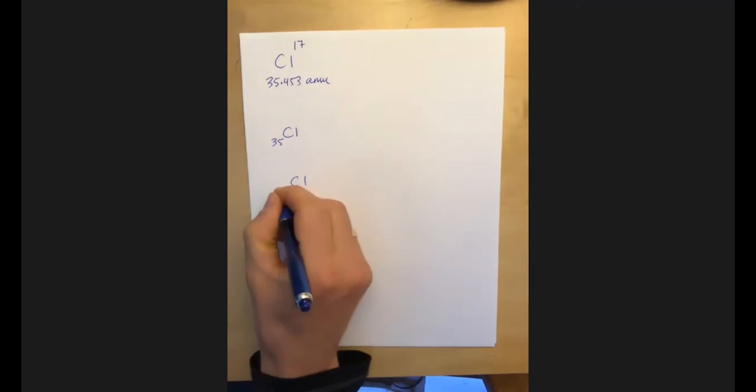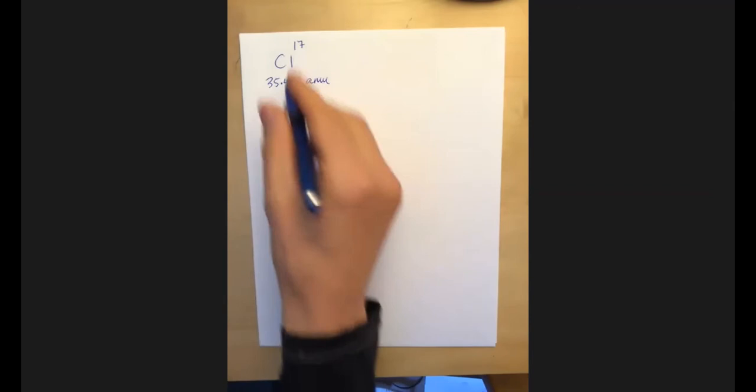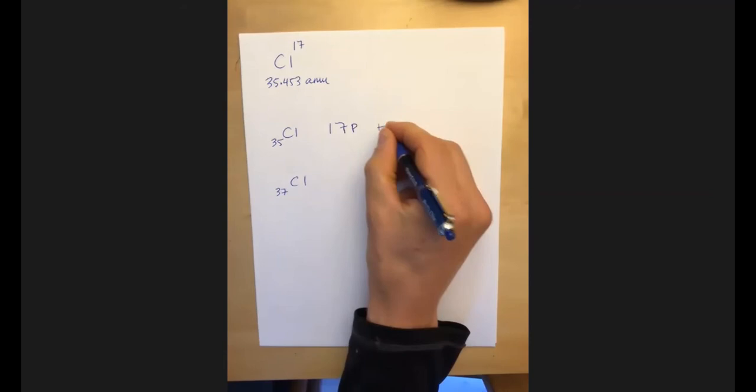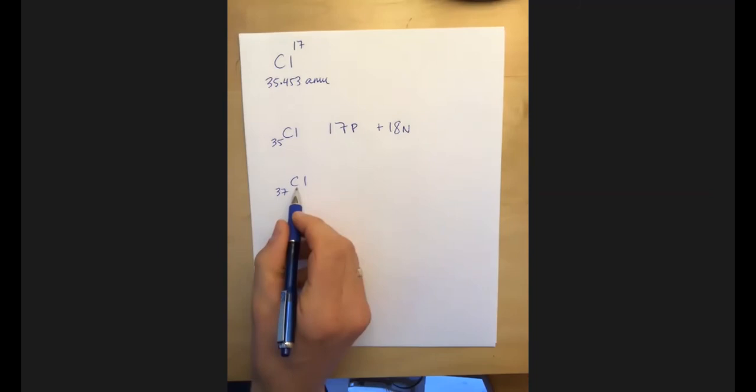And so what that tells us is that if it's chlorine, it must have 17 protons. Chlorine 35 must have 18 neutrons, right? Yep. Chlorine 37 has 17 protons and it must have 20 neutrons.